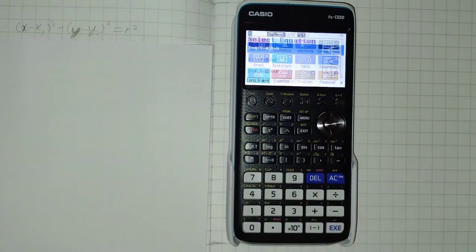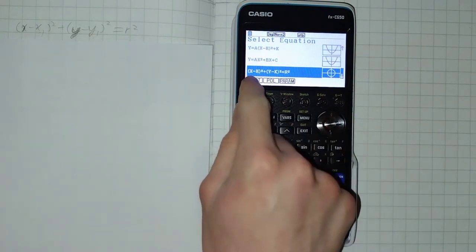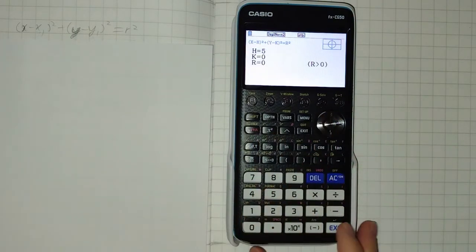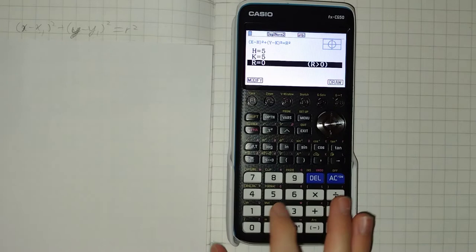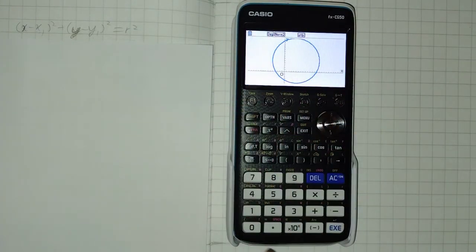Now we could use the conics graphs mode. This lets us plot circles in the form we want to do here or the expanded form, and I will demonstrate centre of 5,5 and let's say a radius of 10. We draw it and we got our circle.